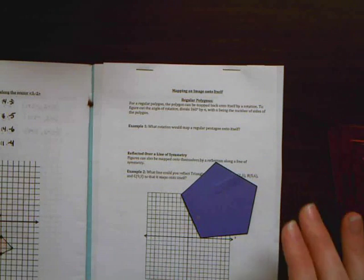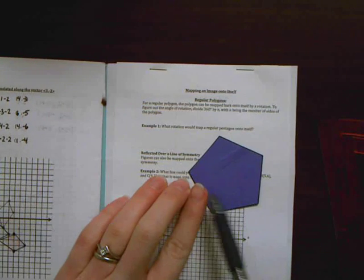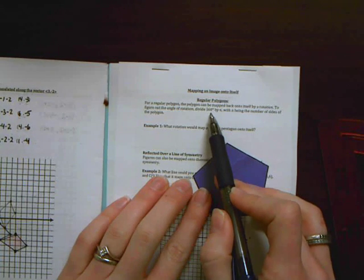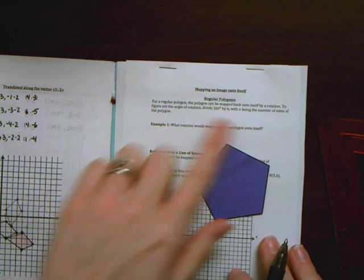If you have a regular polygon, then its rotational symmetry can be found by taking the number of sides, so in this pentagon there are five sides, and dividing 360 by the number of sides.